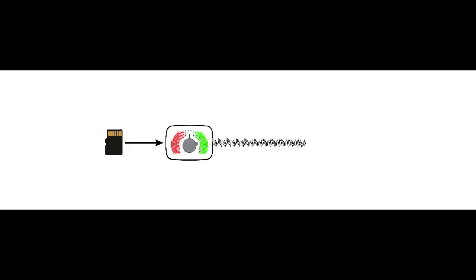When using pre-recorded sounds such as a drum loop, it is possible to eliminate two stages of this noise addition completely by loading sounds onto an SD card for use in the Morphogenes instead of recording it into the inputs. This will bypass both the output of the playback device and the input of the Morphogenes.